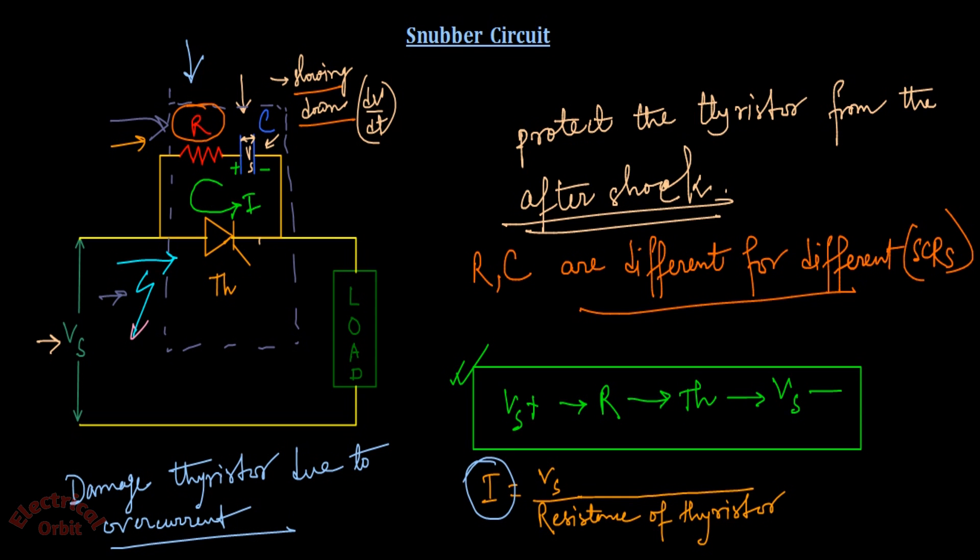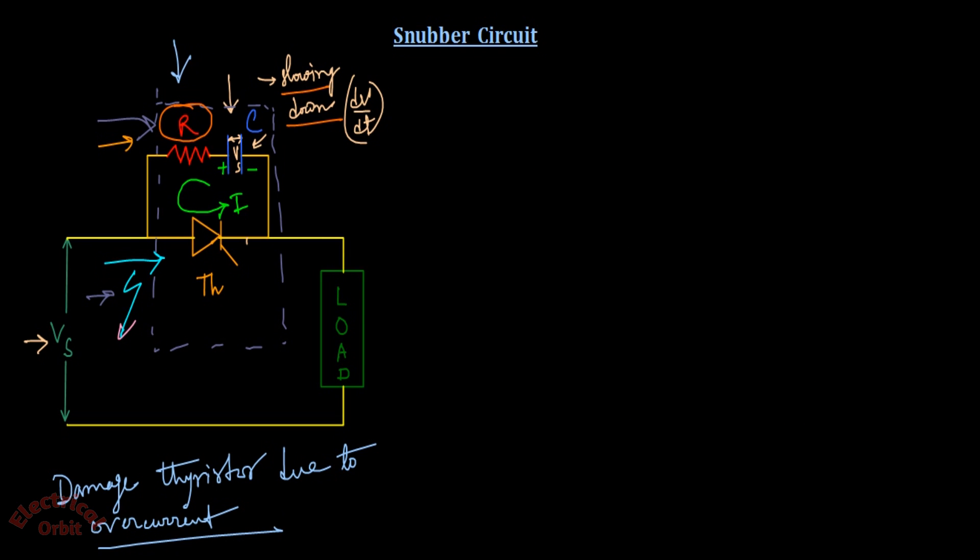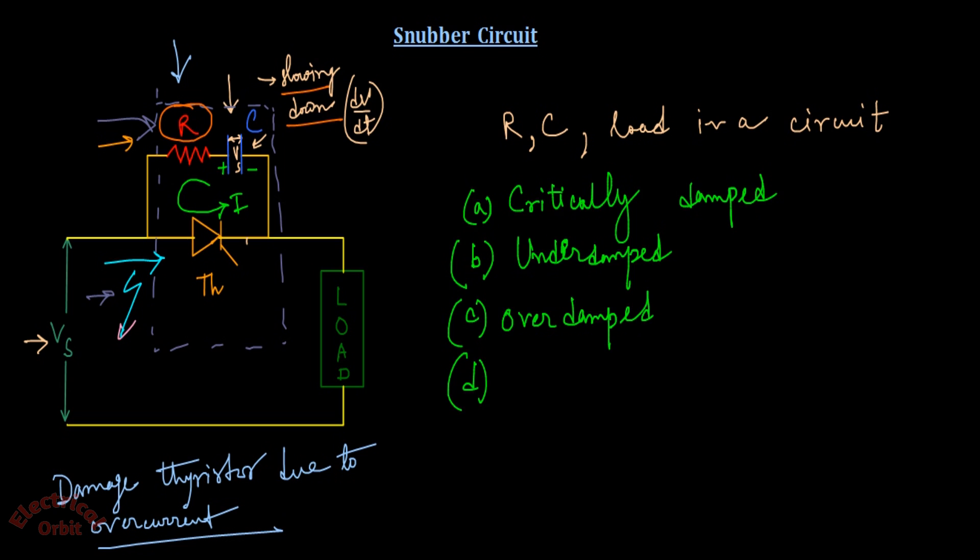Before conclusion, let me ask you a question: whenever you are having a resistance, a capacitor, a load in a particular circuit or in this snubber circuit, what type of circuit is it forming? Your options are: a) critically damped, b) under damped, c) over damped, and d) none of the above. Give your answer in the comment section below. Thank you.